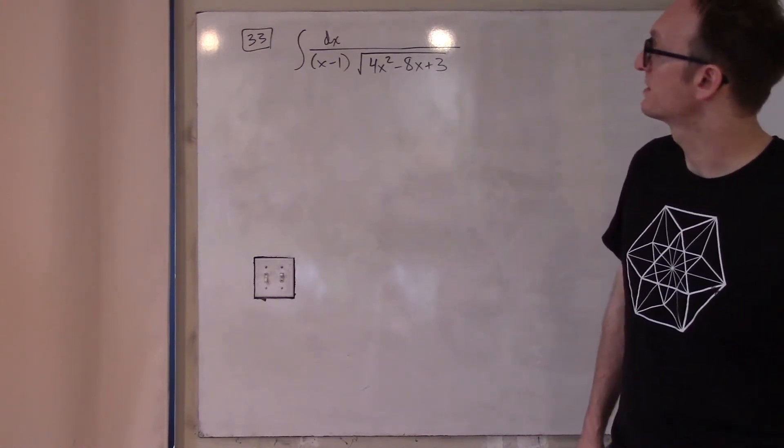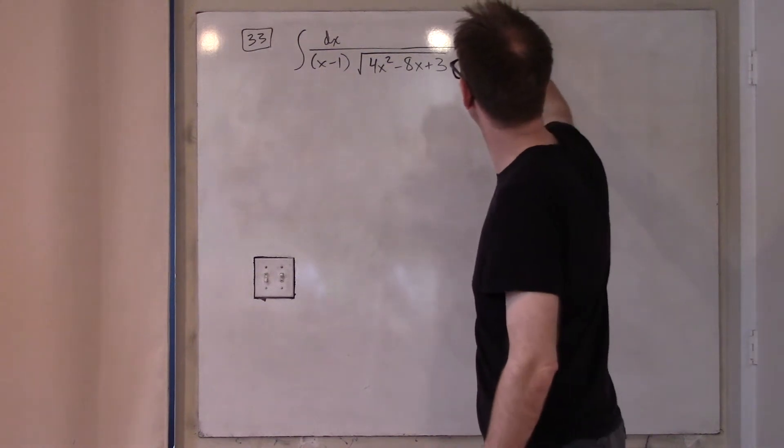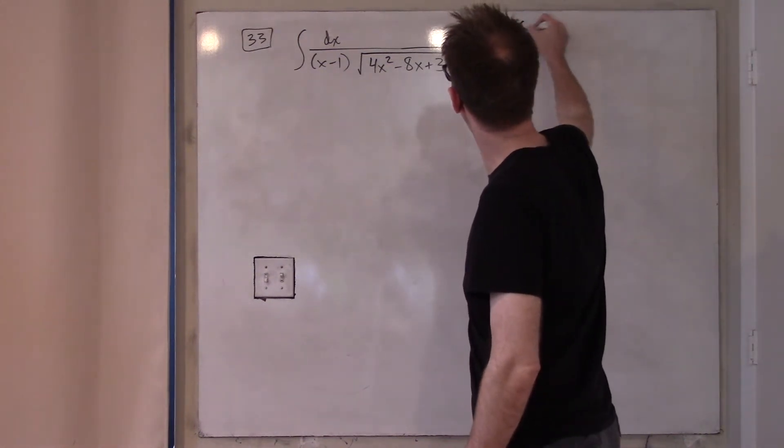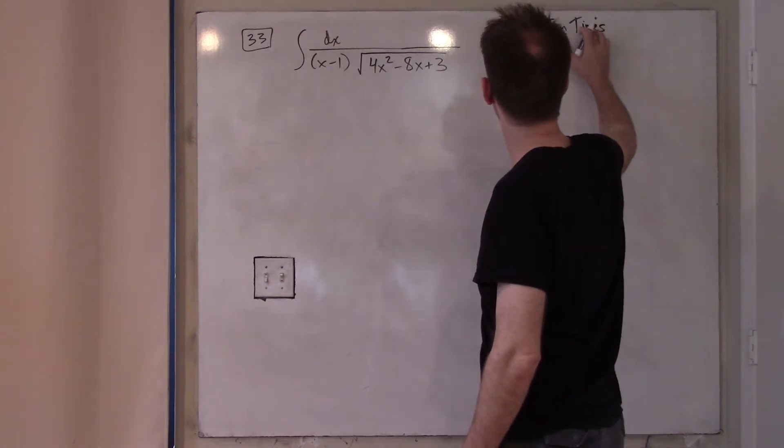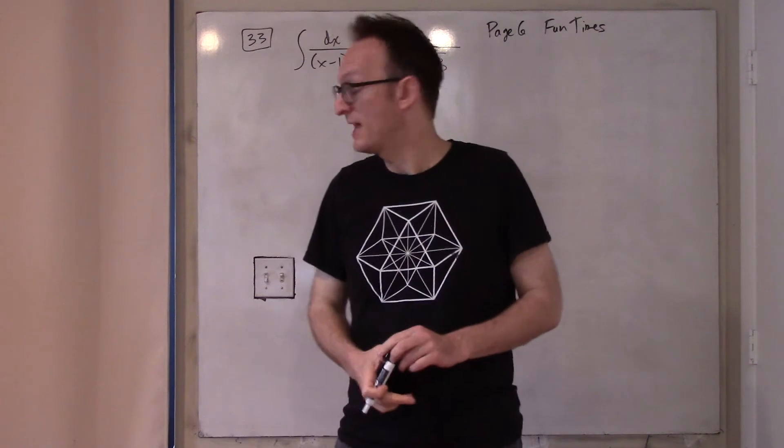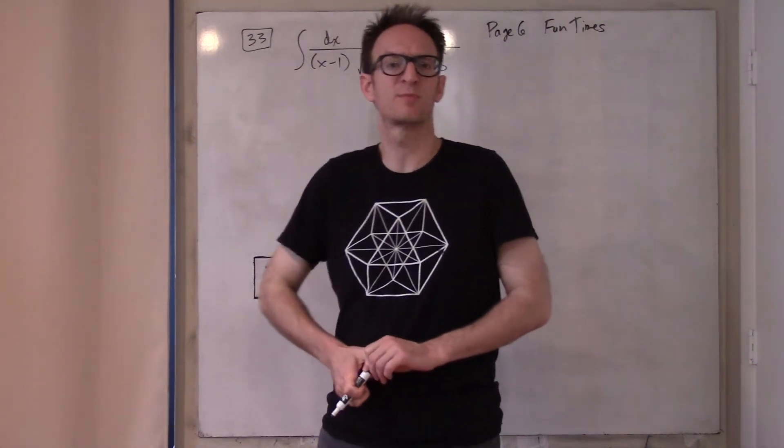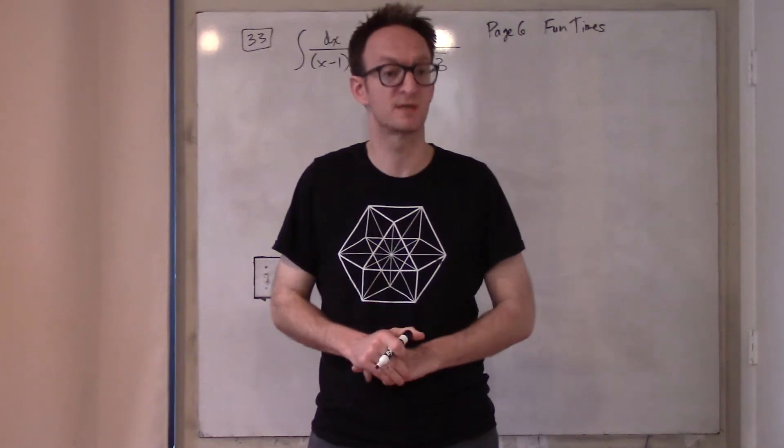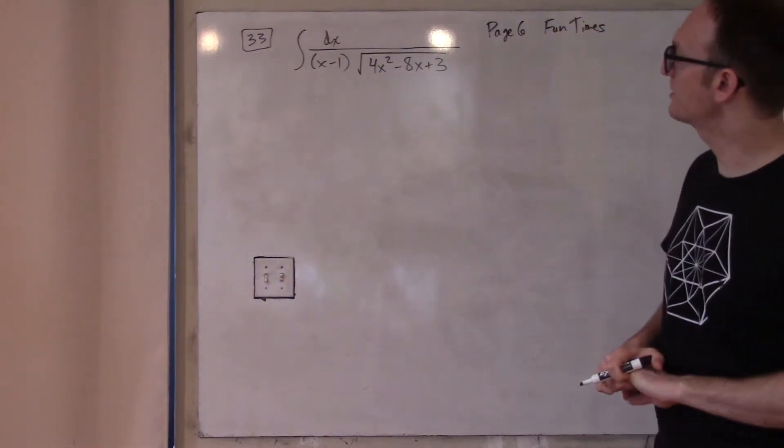So let's just do it. This is number 33 from page 6 of the fun times with anti-differentiation packet and you were supposed to finish this problem for homework and it's due today. I think in the video I just misnumbered a problem and simply skipped this problem by accident.